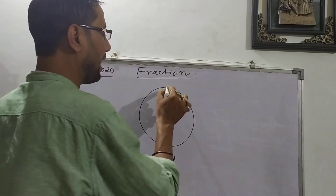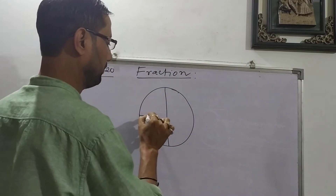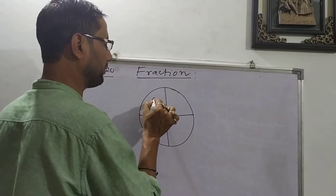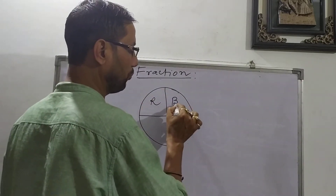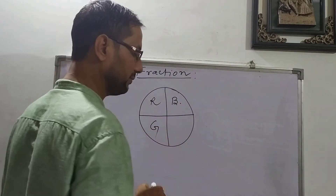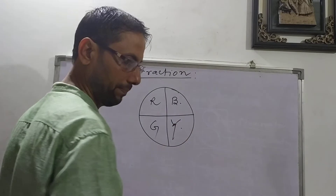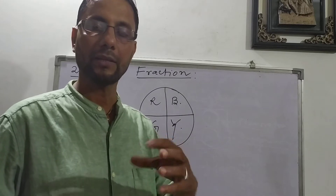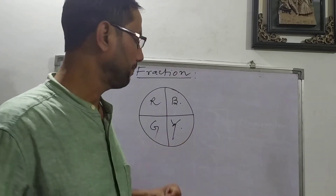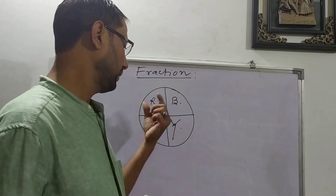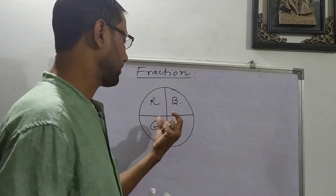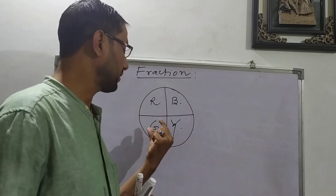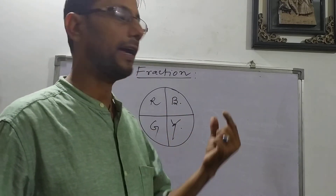This is the diagram. I have divided this diagram into four equal parts. Suppose this is the red part, this is the blue part, this is the green part, and this is the yellow part. So we can see: this is the red portion, this is the blue portion, this is the yellow portion, and this is the green portion.